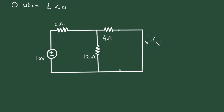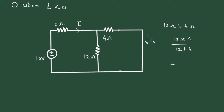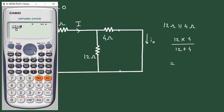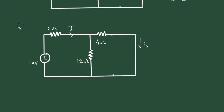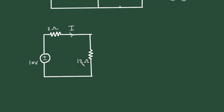Now we have to find the value of this current. Let's say this total current is I. As we can see, this 12 ohm and 4 ohm are connected in parallel. So 12 parallel with 4 gives 12 multiplied by 4 divided by 12 plus 4, which equals 3 ohm. We can replace these resistors with a single resistor of 3 ohm.